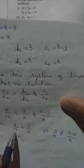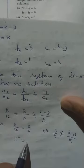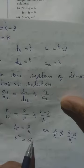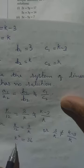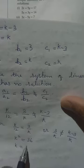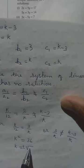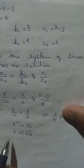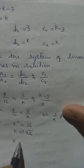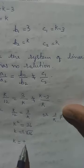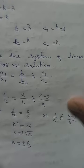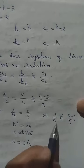We have k² equal to 36. We want only k, so we should put square root. Remember, once we put square root, that means k equals plus or minus 6.